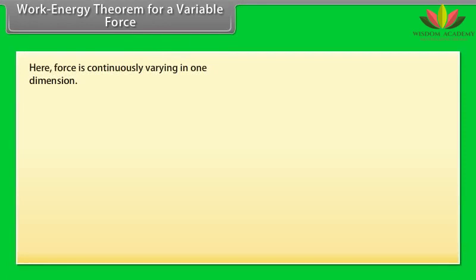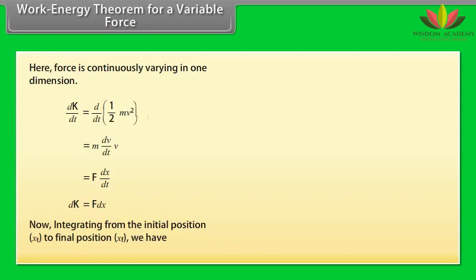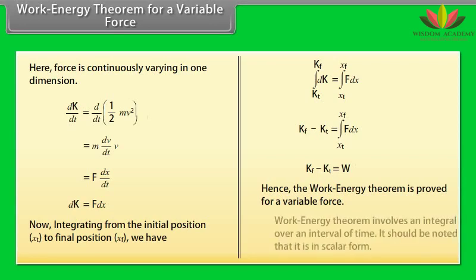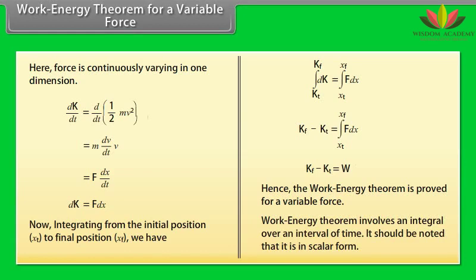Work energy theorem for a variable force. Here force is continuously varying in one dimension. By calculating Dk by dt equal to d by dt into half mv square, we get Dk upon dt is equal to f into dx by dt, which gives Dk is equal to f dx. Now integrating from the initial position xt to final position xf, we have kf minus kt equals to work. Hence, the work energy theorem is proved for a variable force. Work energy theorem involves an integral over an interval of time. It should be noted that it is in scalar form.